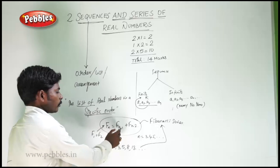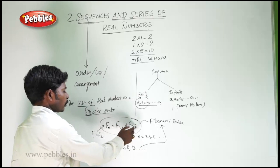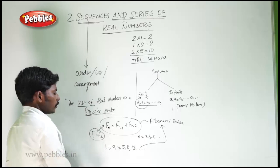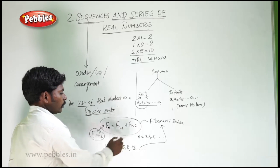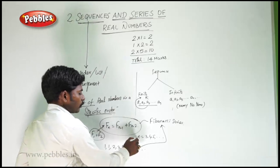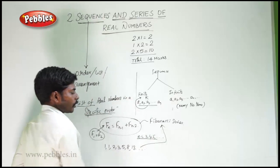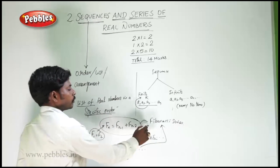So f(n) = f(n-1) + f(n-2), where f(1) = f(2) = 1, and n = 3, 4, 5, and so on. This is called the Fibonacci series.